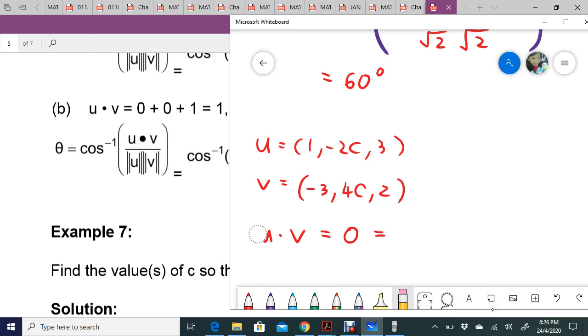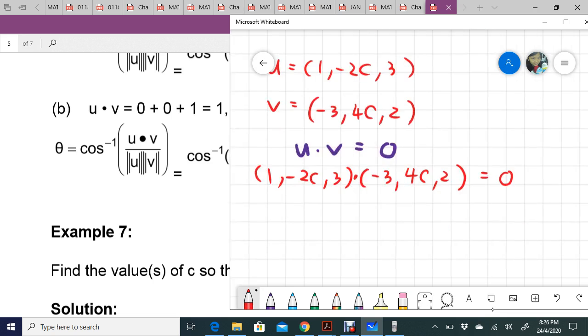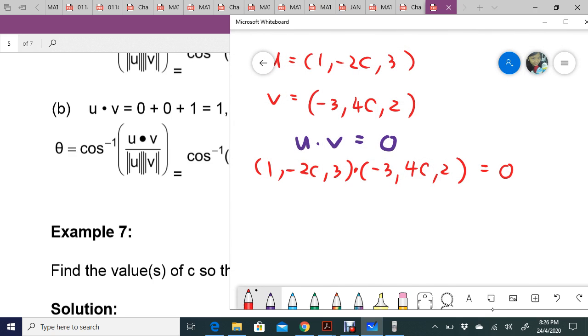Or you can just write it this way: u dot v equals zero. Then you just replace back: (1, -2c, 3) dot (-3, 4c, 2) equals zero.